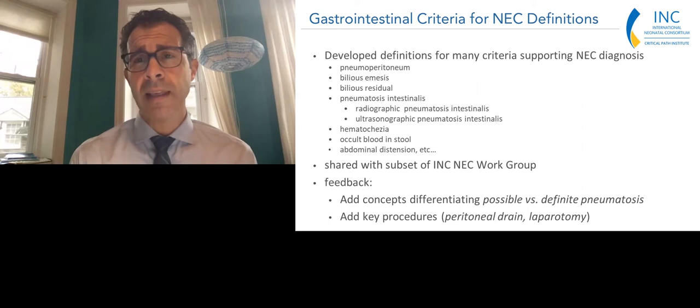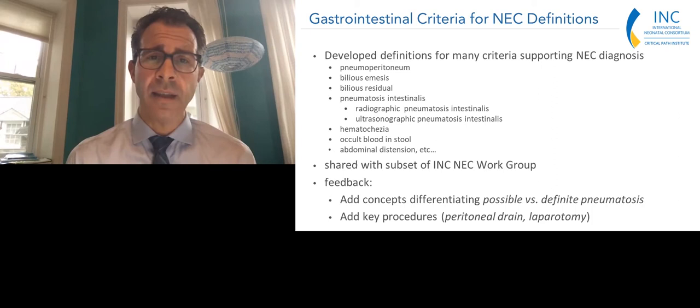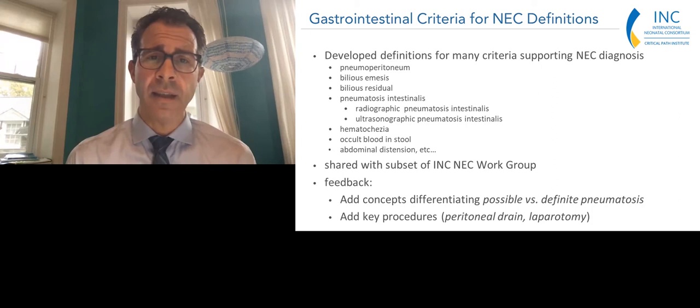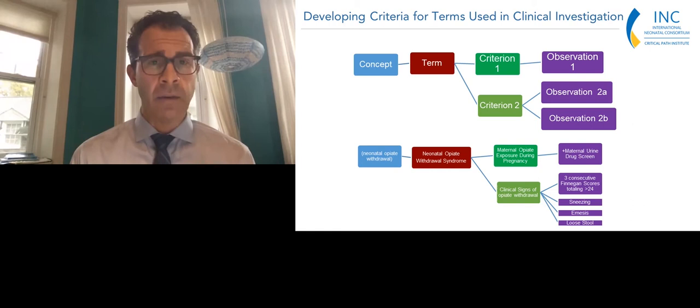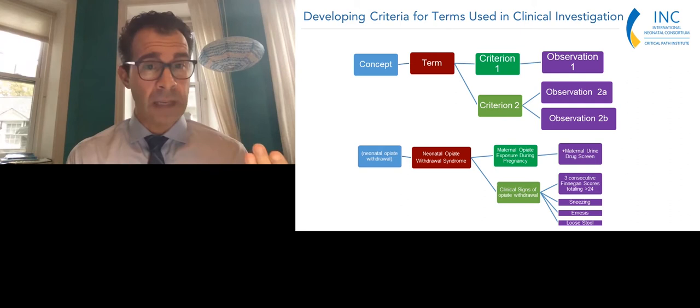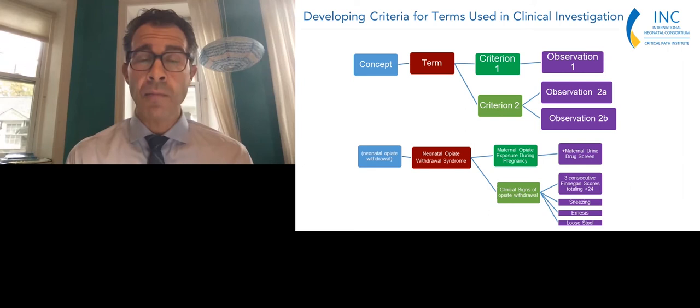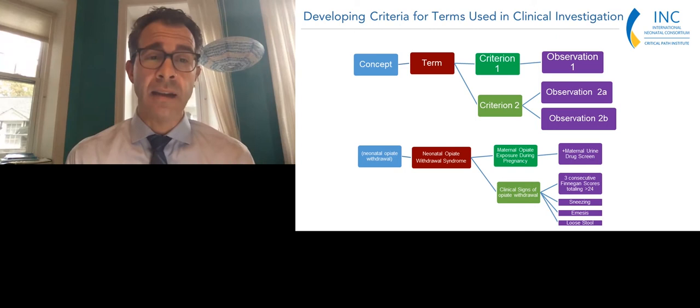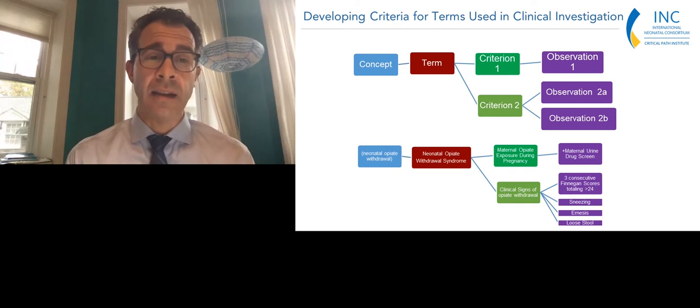We also developed definitions around neonatal opiate withdrawal syndrome. You might look for different criteria — observations that contribute to Finnegan scoring or drug screen testing — to help support that diagnosis. So you're really assembling these building blocks so that the data can be most useful for the work group and clinical trials.